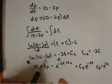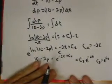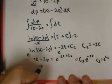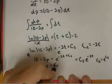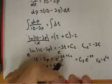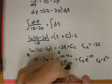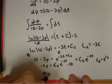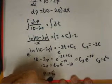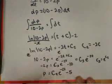Last thing I have to do is I'm going to subtract 10 from both sides. So I'm going to have negative 2p equals c3 e to the negative 2t minus 10. And then I'm going to divide both sides by negative 2. So p equals, I'm going to absorb the constant again. So call that c4 e to the negative 2t minus 5.